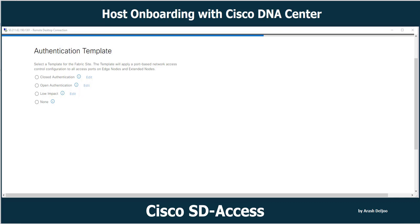An 802.1x phased approach is the best way to make sure the transition towards secure network access control is seamless to end clients and administrators. However, a phased approach requires additional work by the network administrator whenever configuration changes need to be performed on network devices to move from phase one to phase two. Phase deployment involves changing the port-level configuration on switches, which is time-consuming and error-prone to do manually.